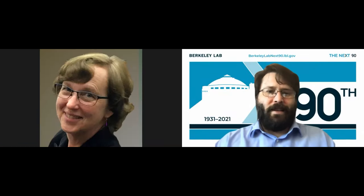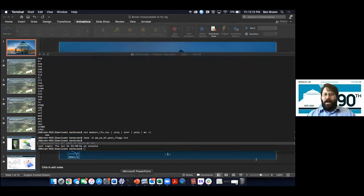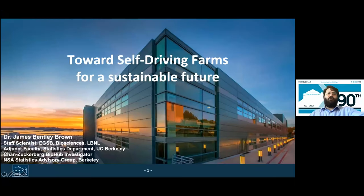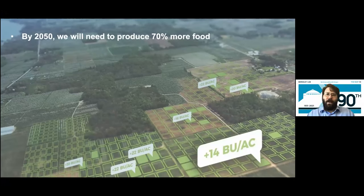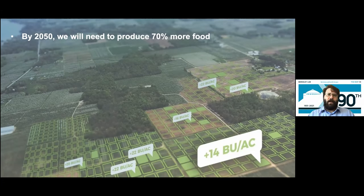Thank you, Kathy. I'm going to be telling you about AI for Ag — trying to build something that looks like a self-driving farm in the same sense that you have a self-driving car, for a more sustainable future. By 2050, with the world's population growth, we're going to have to provide 70 percent more food with about the same amount of cultivated land. That's a real challenge, and it's one we believe AI in agriculture can help address.